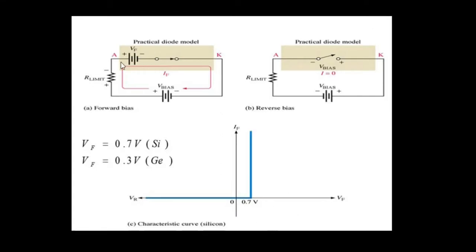The equivalent circuit for a practical diode acts as a voltage source in series with a switch. Before this practical diode will work, it needs an amount of voltage to force it to work. For silicon diodes, this voltage is 0.7V, and for germanium diodes it is 0.3V. When it is forward biased, it acts as a switch once it gets the required amount of voltage. When it is reverse biased, it does not allow the flow of current, same as the ideal diode.